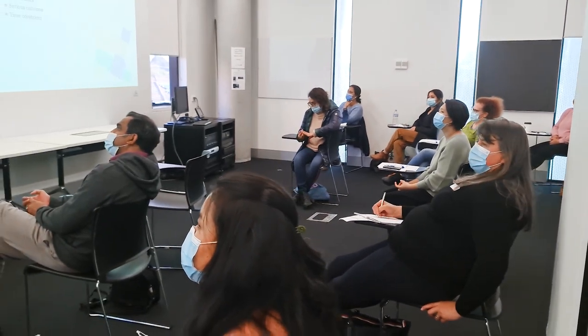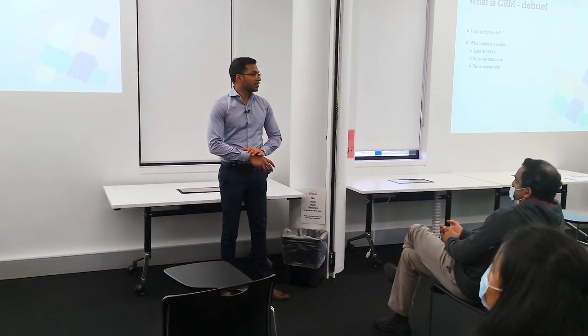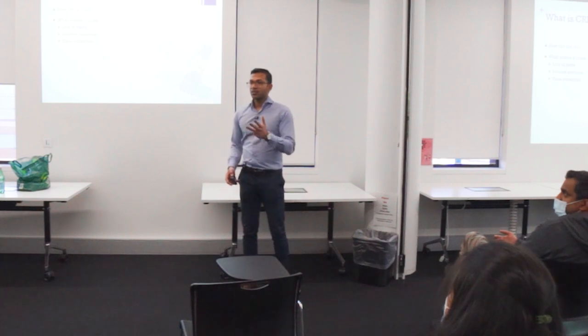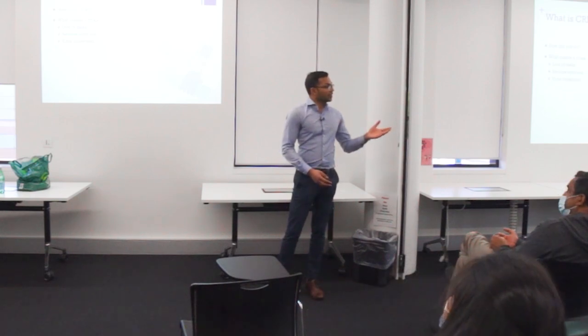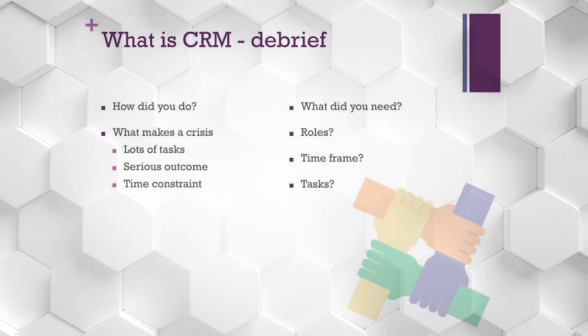What's a crisis you've seen? A fire — absolutely. There's lots of things you've got to do, there's a serious outcome, and the fire can spread rapidly. The context is everything. In a crisis, what do you need to make it work effectively? A team leader, a good working team, a good plan, good communication, clear thinking, don't panic, and practice — rehearsal through simulations or even just thinking about it. You need a team, roles, a time frame, and tasks to be allocated.